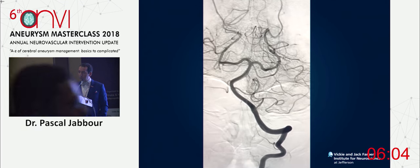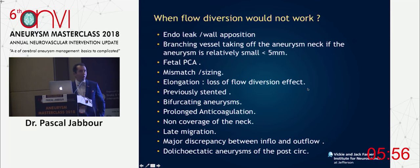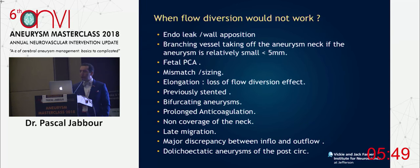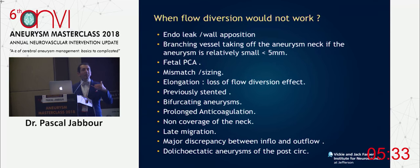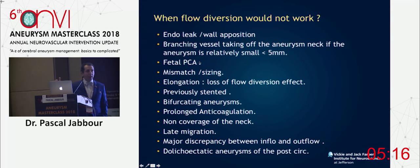The issue is not where the pipeline works — it's mainly where it doesn't work, and choosing the patient is key. There are many cases where pipeline most likely won't work: wall apposition is very important, and branching vessels taking off the neck of the aneurysm is what keeps an aneurysm patent. If the aneurysm is large, you can create enough stasis to occlude the aneurysm. Fetal PCA is a known limitation — we published about that, though some groups disagree.